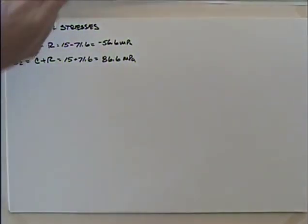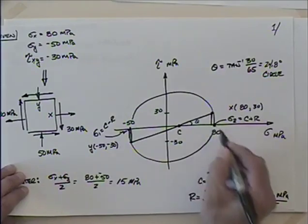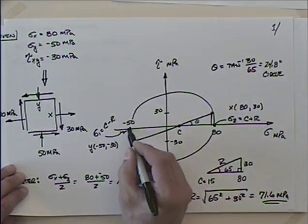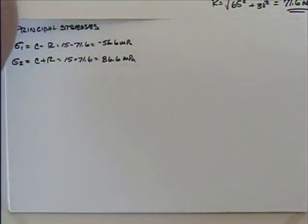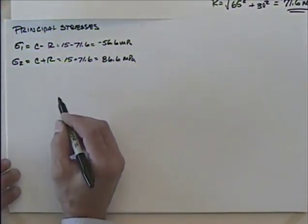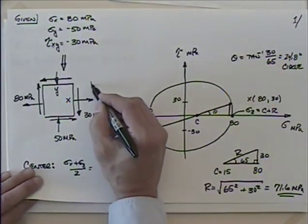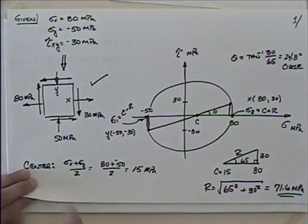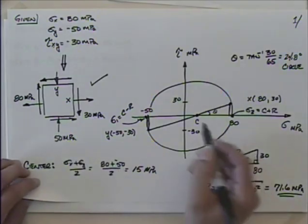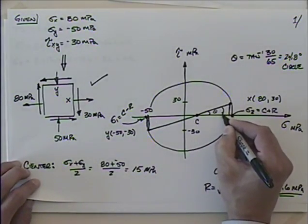Those values are a little past 80 — 86.6 in fact — and a little smaller than minus 50, which is minus 56.6. Oftentimes they'll ask you to show those stresses on a properly oriented element. Our element starts out horizontal and vertical. To get to principal orientation, I need to rotate it.